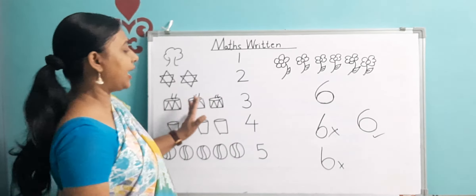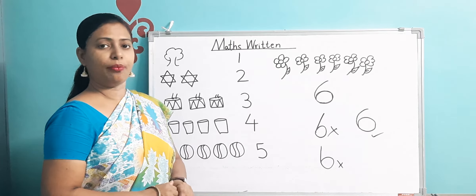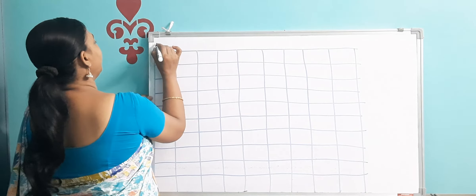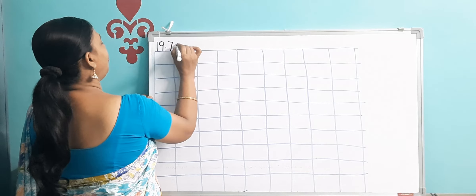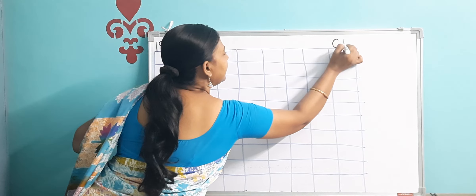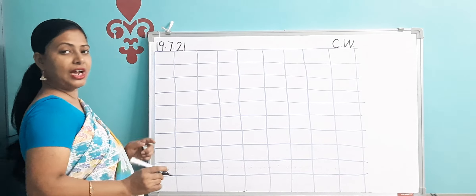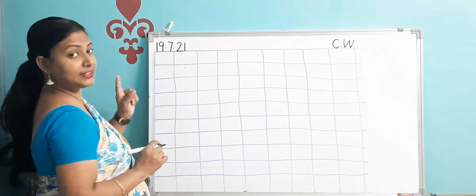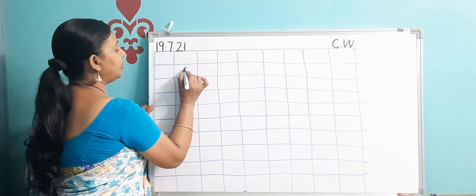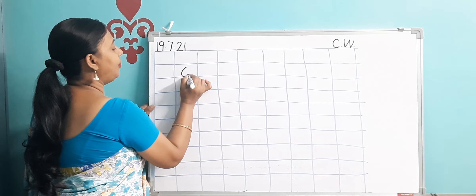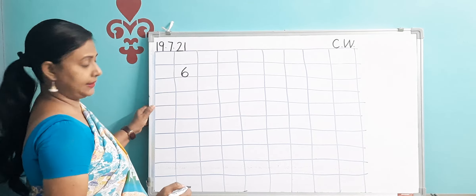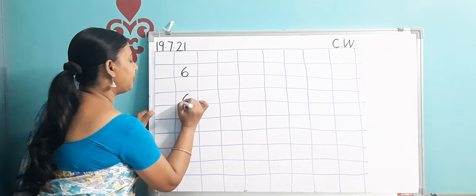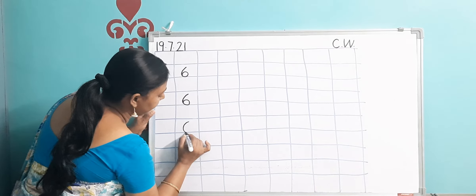So now we are going to learn how to write. Quickly be ready with your copy, and we will write in the squares. Today is 19.7.21. This is Class Work. So we will start. In maths, we leave the first whole line and this whole line. We will come to the next square, and from the middle you will draw a curve like a semicircle, go up and draw a circle. This has become number six. Then leave one line below six and then again — look at my hand. In that manner, you have to write without lifting up your pencil.